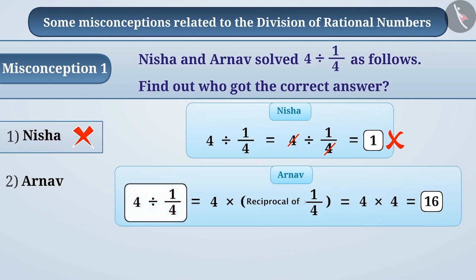That is, 4 divided by 1/4 is equal to 16. In this way, Arnav got the right result. That is, the correct answer is option 2.